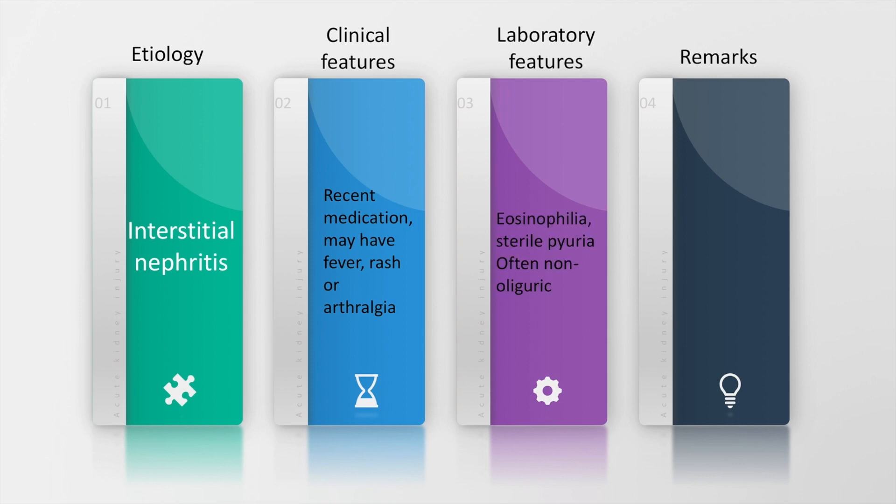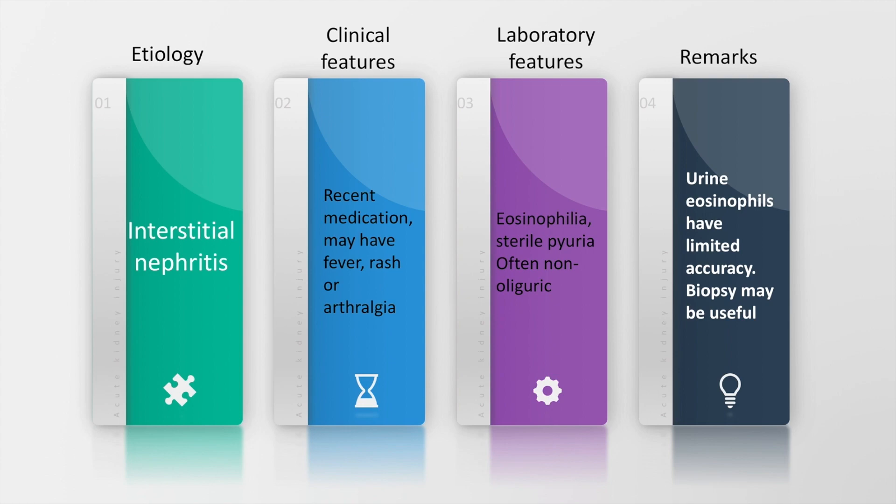Interstitial nephritis may have a preceding history of recent medication and also present with fever, rash, and arthralgia. Laboratory features include eosinophilia and sterile pyuria, and patients are often non-oliguric. Urine eosinophils has limited accuracy in the diagnosis of interstitial nephritis, and renal biopsy may be required.